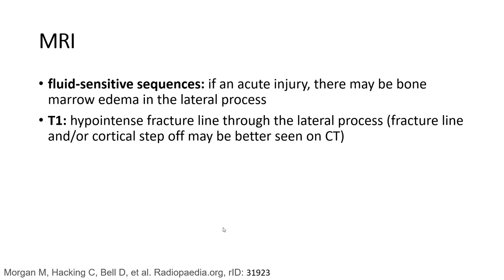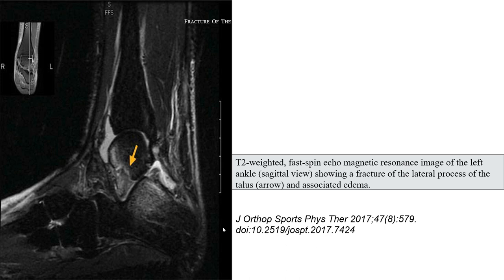On fluid-sensitive MRI sequences, with an acute injury there may be bone marrow edema in the lateral process. On T1, a hypointense fracture line is visible through the lateral process. Fracture line and cortical step may be better seen on CT. This is a T2 image of the ankle showing a fracture of the lateral process of the talus, indicated by the arrow, with associated bone marrow edema.